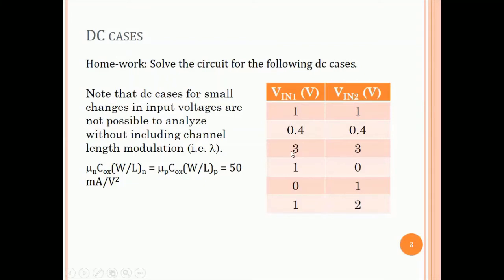Remember, as we have discussed for the current source load, considering or analyzing DC cases for small changes in the input voltages is very unreal because we do not include channel length modulation and so voltages behave strangely without channel length modulation. Generally, these cases when the difference between these voltages is small are not discussed for DC conditions. Use these values, mu and Cox W by L, both equal to 50 milliampere volt square and the threshold voltage is the usual 0.4 volts.